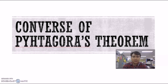Hello everybody, today we are going to look at the Converse of Pythagoras' Theorem. Now previously in Pythagoras' Theorem, what kind of triangle do we need before we can apply the formula? We need a right angle triangle. And because we have a right angle triangle, we can apply the formula c squared equals to a squared plus b squared to help us find the unknown length in the right angle triangle.